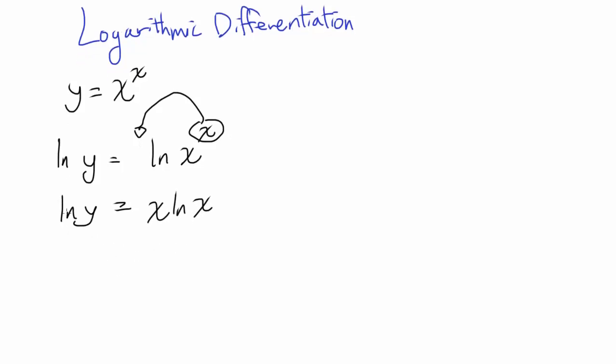Now we are going to differentiate. Differentiating natural log of y gets us 1 over y times y prime. Differentiating x times natural log of x, we have to apply the product rule. You have x times 1 over x plus 1 times natural log of x, also known as 1 plus natural log of x.